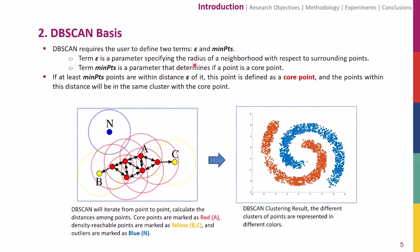By the setting of those two parameters and the definitions, points are classified into three categories: core points in red, density reachable points in yellow, and outliers in blue. Then DB-SCAN iterates point to point to grow the clusters around the core points. DB-SCAN has shown potential for marine trajectory clustering because it is able to cluster points with complex and arbitrary shapes, which is why I chose DB-SCAN as the foundation of the clustering algorithm.